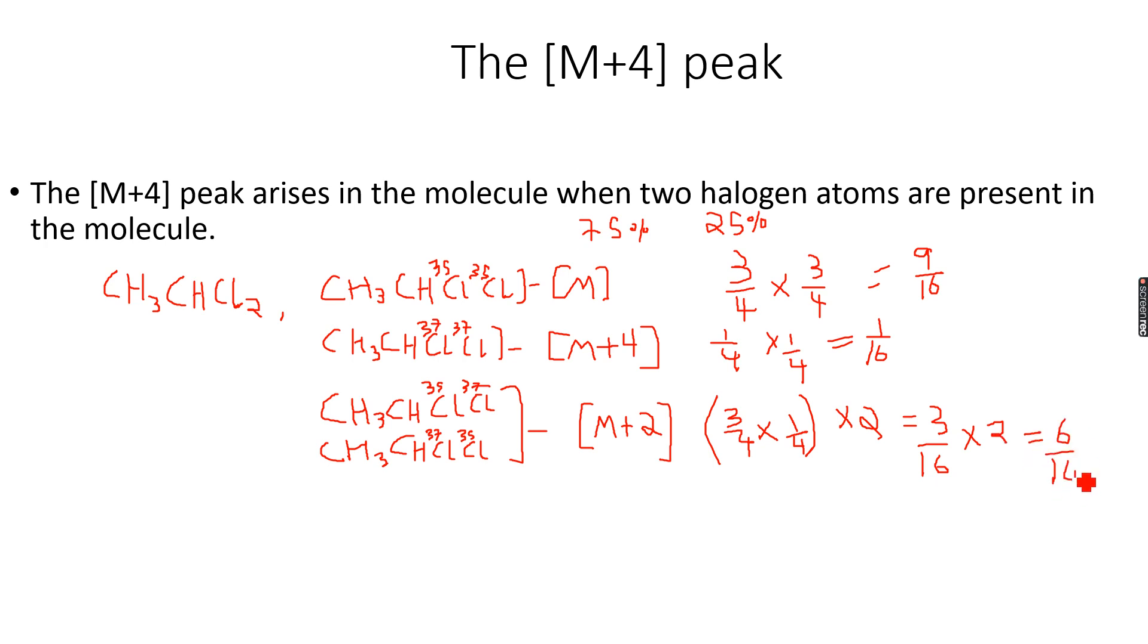When we do this, first we get 3/16, and this multiplied by 2 we get 6/16. So that's what we get for our M+2 peak. So now if you want to calculate the ratio for M:M+2:M+4, if you want to calculate the ratio for their relative abundances, we get 9/16:6/16:1/16.